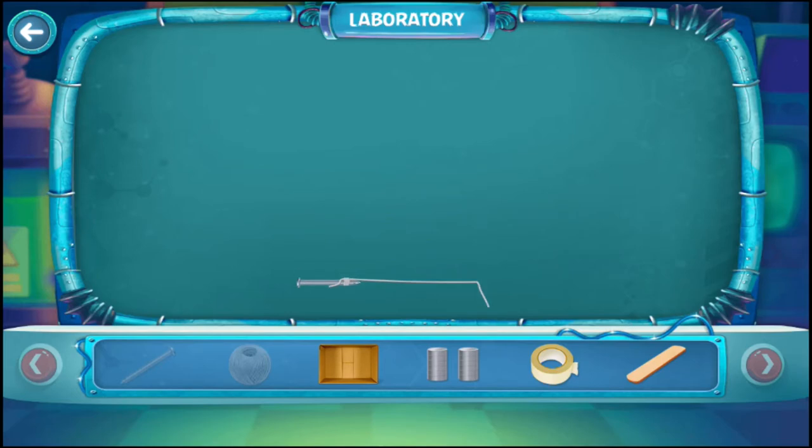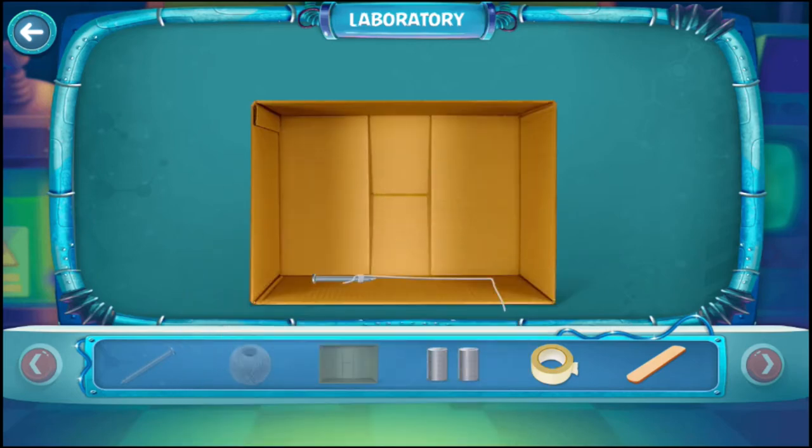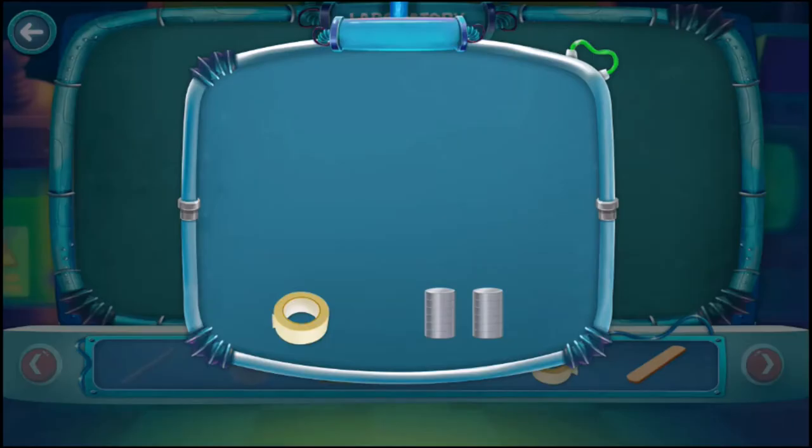Take a cardboard box. Now take two small magnets. Let's join them to make a single big magnet. Take a length of adhesive tape, place the magnet in the center, and stick it around firmly.